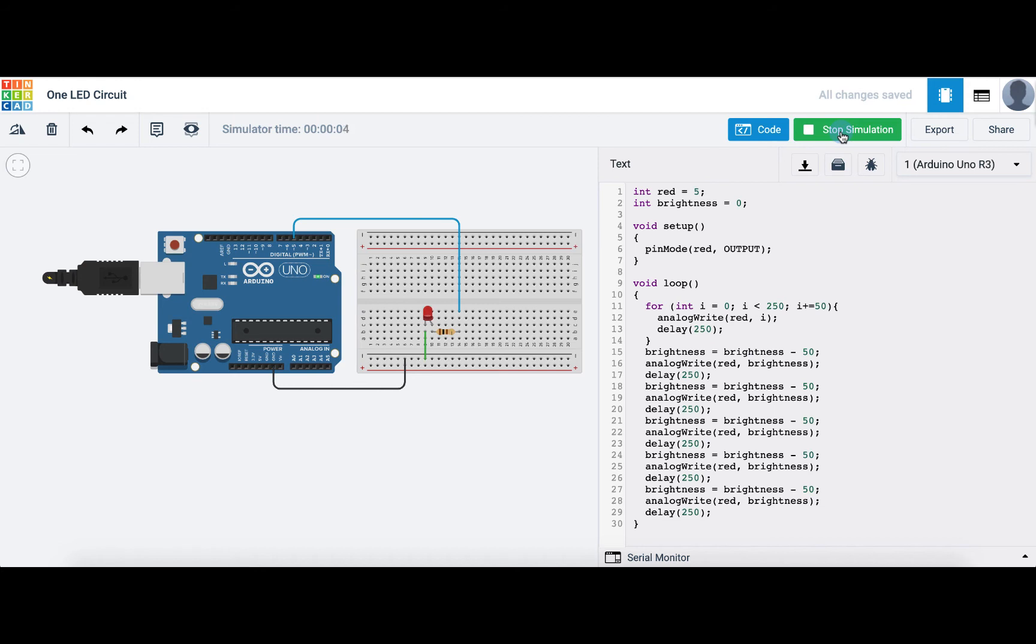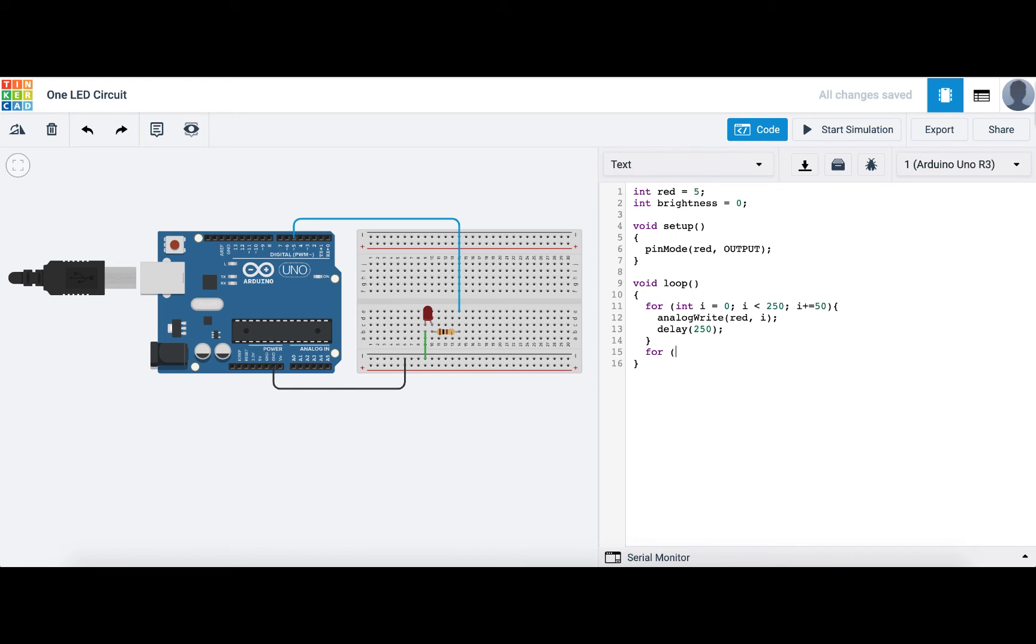Now we can also use a loop to control the rest of our code. All we are doing is now decreasing the brightness by 50 every quarter second until it reaches 0, so let's implement that loop also. We can write for int i equals 250, i is greater than 0, i minus equals 50. And inside our curly braces, we just want to set red to that value of i and wait a quarter second. Let's see it all together. Perfect!